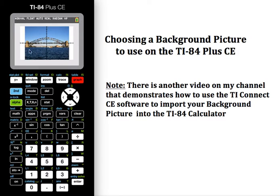Like I said earlier, you would use this if maybe you were going to do a regression. Obviously we see an upside-down parabola there, so I could use a quadratic regression that the calculator would allow me to do, and I could come up with the curve that matches that bridge. So just a quick demonstration on how you would select your background picture after it has already been imported into your calculator.